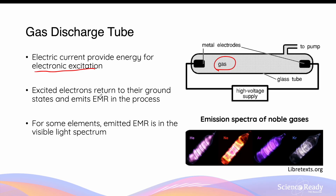Afterwards, these excited electrons will return to the ground state by emitting electromagnetic radiation, EMR, in the process. A gas discharge tube can contain various types of gases, and some gases will emit EMR in the form of visible light when their electrons return to the ground state, allowing a very unique colour to be visualised inside the tube. For example, helium produces a purple colour and neon produces an orange colour. The difference in colour corresponds to the exact frequency or wavelength of visible light emitted when the electrons in the helium or neon atoms return to the ground state.